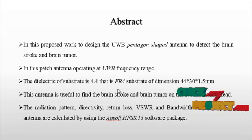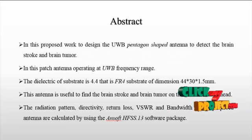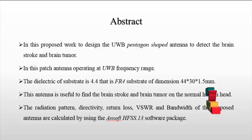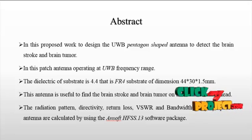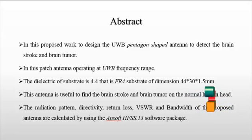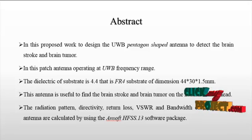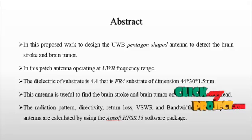Let us discuss about the abstract of the project. The microstrip antennas basically consist of a radiating patch on one side of a dielectric substrate, which has a ground plane on the other side. The patch is generally made of conducting materials such as copper and gold, and the patch is very thin.